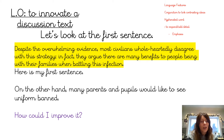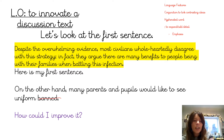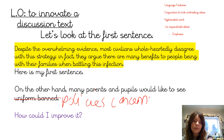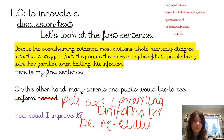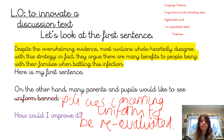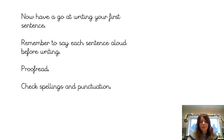I can improve this though. I like 'on the other hand, many parents and people would like to see' — I'm going to say 'policies concerning uniform should be re-evaluated.' That's my hyphenated word. Re-evaluated means looked at again. Have a go at writing your first sentence. Remember to say each sentence aloud before writing, proofread it, and check spellings and punctuation.